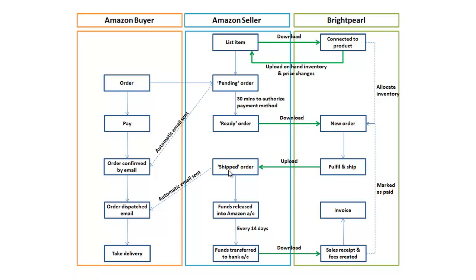Amazon then tells the customer that the order has been dispatched. Once you've fulfilled and shipped your order in Brightpearl, we recommend that you invoice it. A couple of weeks later when you actually receive the funds from Amazon, a payments report is sent to Brightpearl automatically. This is the point at which the sales receipt is created against the Amazon order and any fees are allocated into your accounting system.